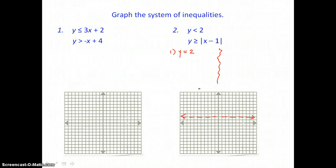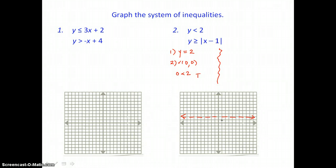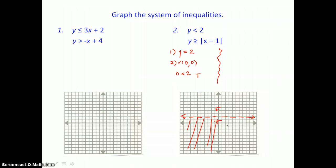Now I need to check for shading in our second step. I can use the origin, since the boundary does not go through it. That means I'm putting 0 in for y. Is 0 less than 2? That's true. So where the origin is, it's true and the other side is false. We're shading the half plane down from that horizontal broken line.